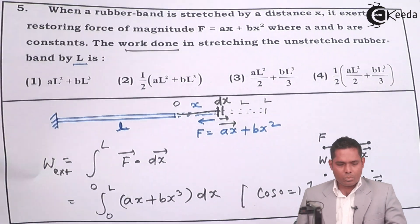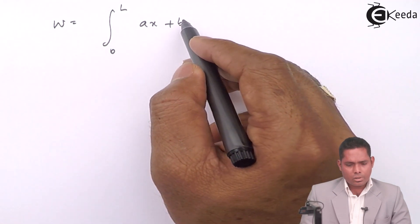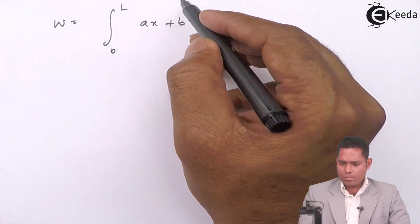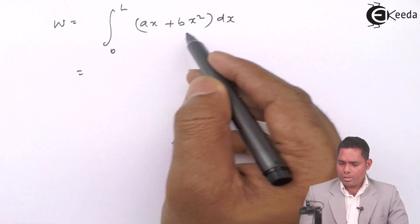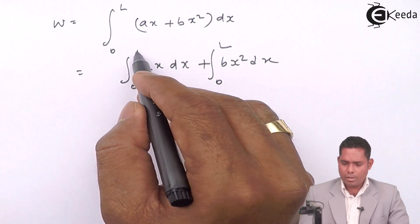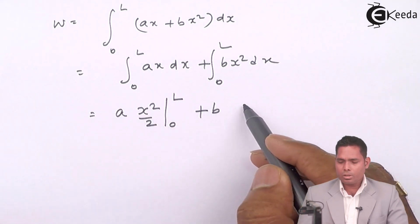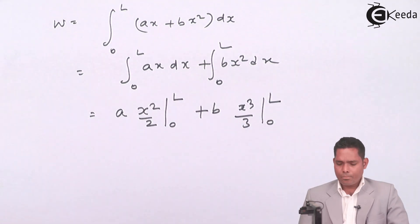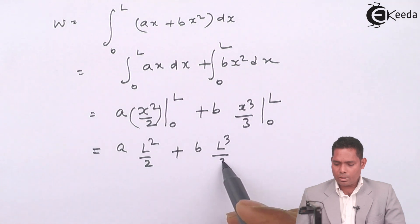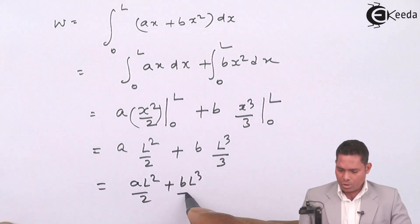Now I have to integrate this. Work done by external agent is integration from 0 to L of ax plus bx squared dx. Note this is x squared, not x cubed. I will separate the terms: integral of ax dx plus integral of bx squared dx, with limit 0 to L. Taking a as constant: a times x squared by 2, from 0 to L; plus b times x cubed by 3, from 0 to L. This gives: a times L squared by 2, plus b times L cubed by 3.